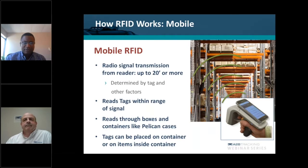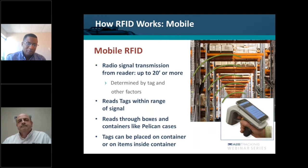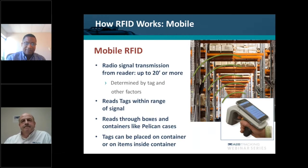We like to load the tag information in the backend database so that the commissioning process — getting a tagged asset into the backend asset tracking system — becomes just a peel-and-stick activity. You peel off a tag, put it on your asset, look the tag up in the system, and then apply the pedigree data right there either on your laptop or through the mobile app that you see pictured there.